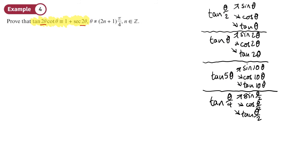Since we have 2θ in this question, rather than setting t equal to θ/2, we're going to let t equal tan θ and double everything up. So the expressions we'll use are for sin 2θ, cos 2θ, and tan 2θ. The relationship remains the same. In this question, I don't think one side in terms of t is obviously simpler than the other.